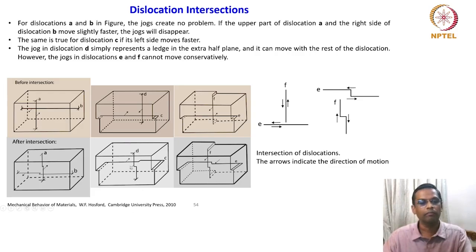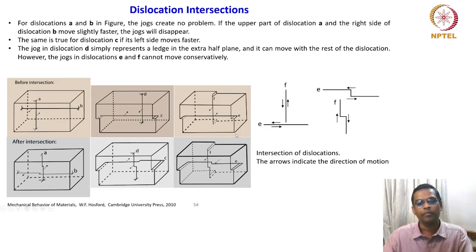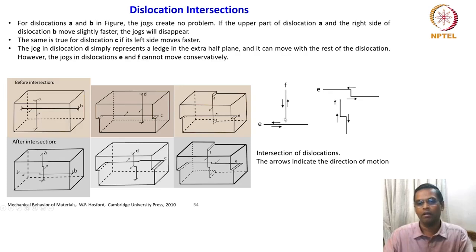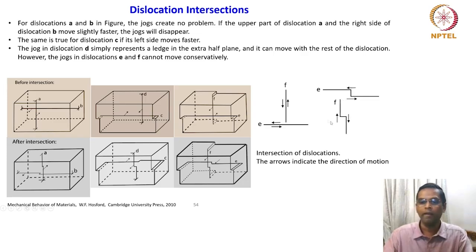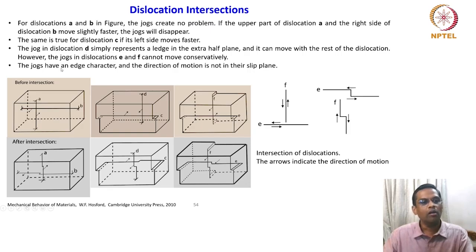However, the jogs in dislocations E and F cannot move conservatively. These two jogs will not move conservatively because — as shown in the enlarged view of E and F — the shear stress acting on these two lines is also shown, along with the enlarged view of the ledge. This ledge will move in certain directions depending upon the direction of force. These jogs have an edge character and the direction of motion is not in their slip plane — that is the problem.